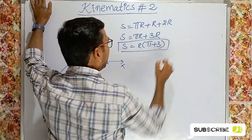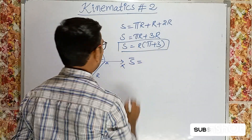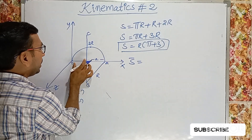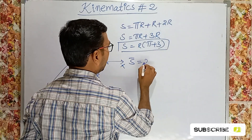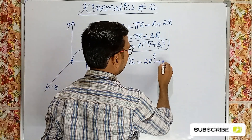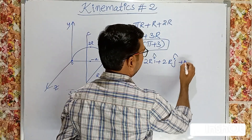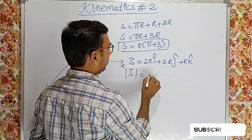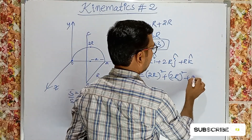Now, what about displacement? We write in vector form: displacement s-bar. Along the x-axis, the shortest path from O to A is 2r, so the x-component is 2r î. Along the y-axis, the component is 2r ĵ. Along the z-axis, the component is r k̂. The magnitude of displacement equals √((2r)² + (2r)² + r²).